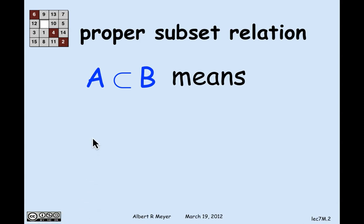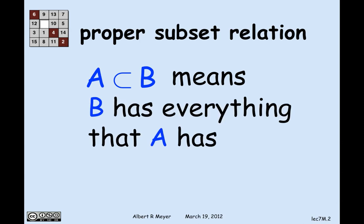I'm interested in the proper subset relation A is a proper subset of B, which, if you remember, means that B has everything in it that A has and something extra. So in particular, since B has something extra, B is not a subset of A, certainly not a proper subset of A.